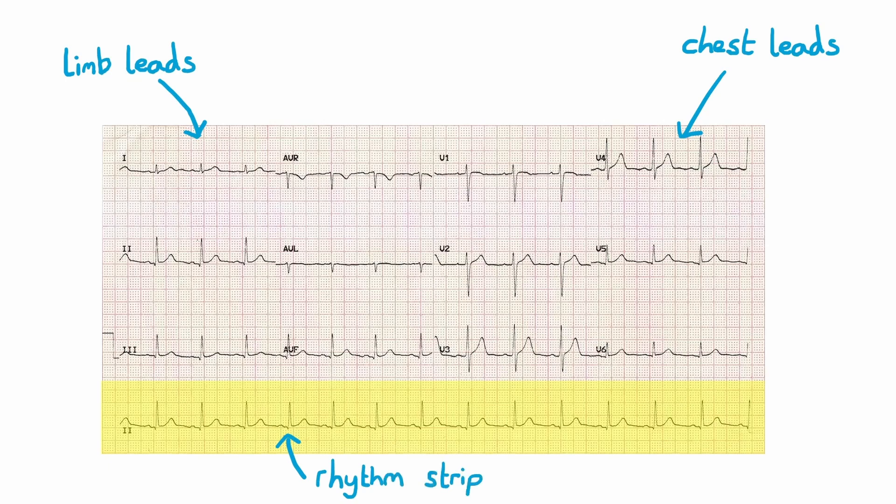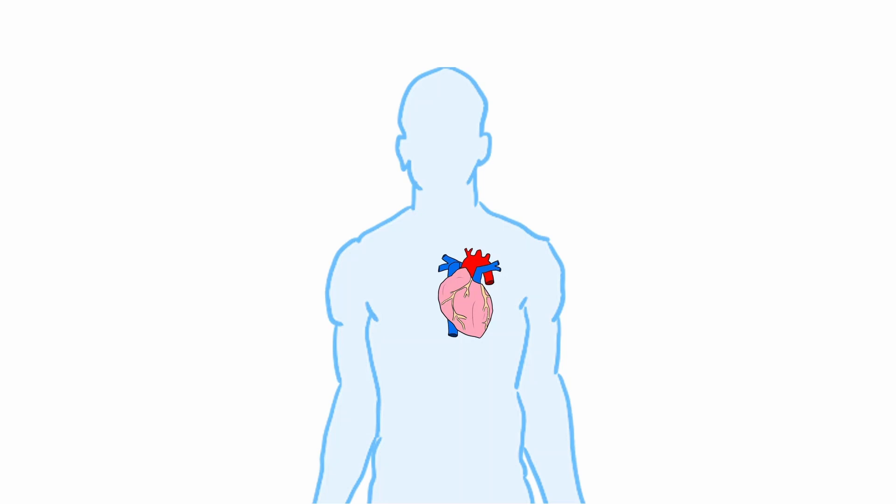Let's now have a closer look at the difference between limb and chest leads. Limb leads look at the electrical activity of the heart in the coronal plane. To better visualize the coronal plane, imagine a guillotine separating the front and back of a person.